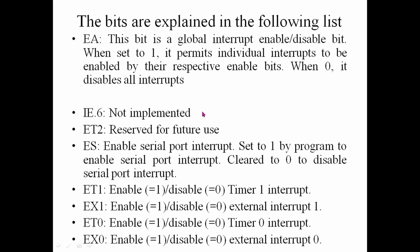EA is the global interrupt enable bit. Bit 6 is reserved for future use. Bit 4 is the serial port enable. Bit 3 enables Timer 1. Bit 2 is External Interrupt 1. Bit 1 enables Timer 0. Bit 0 is External Interrupt 0.